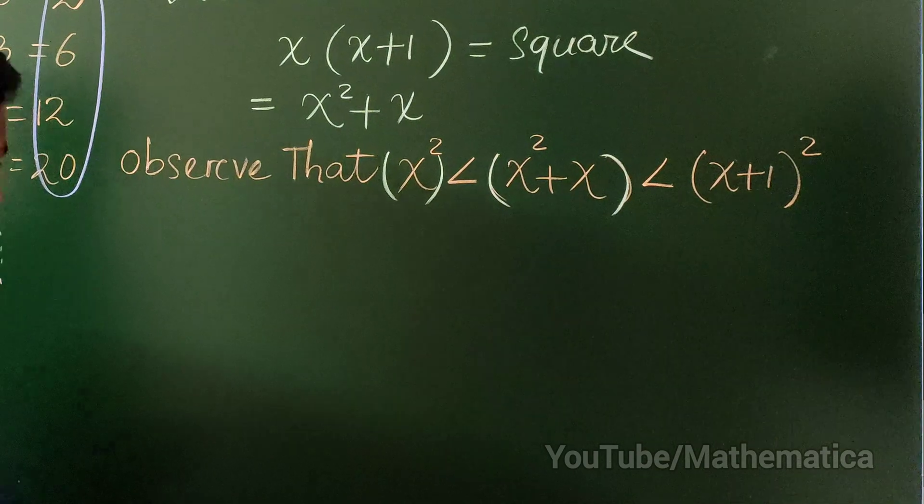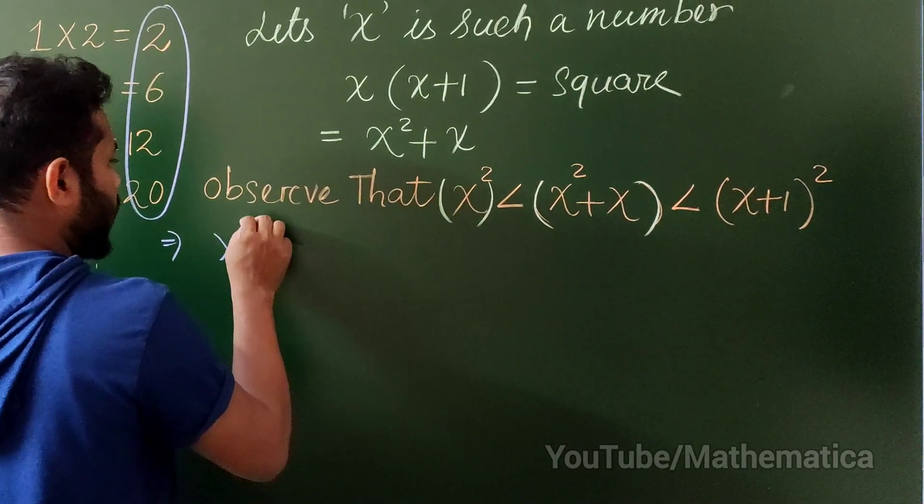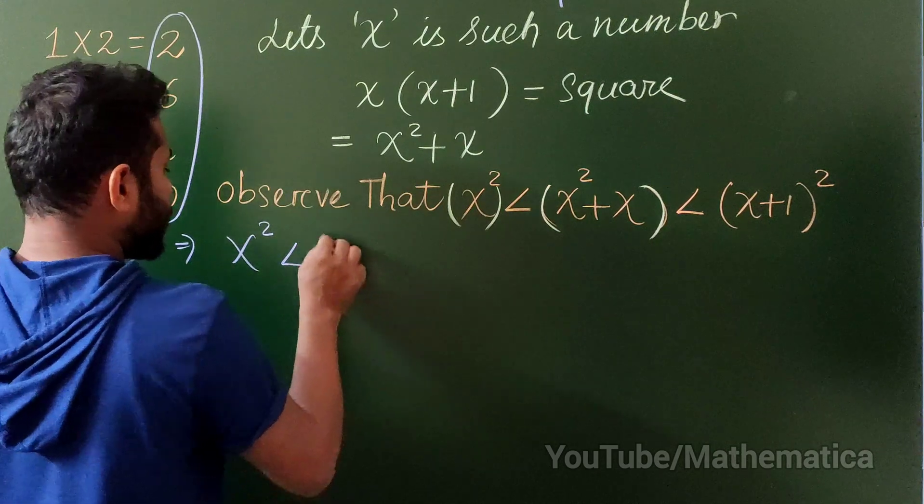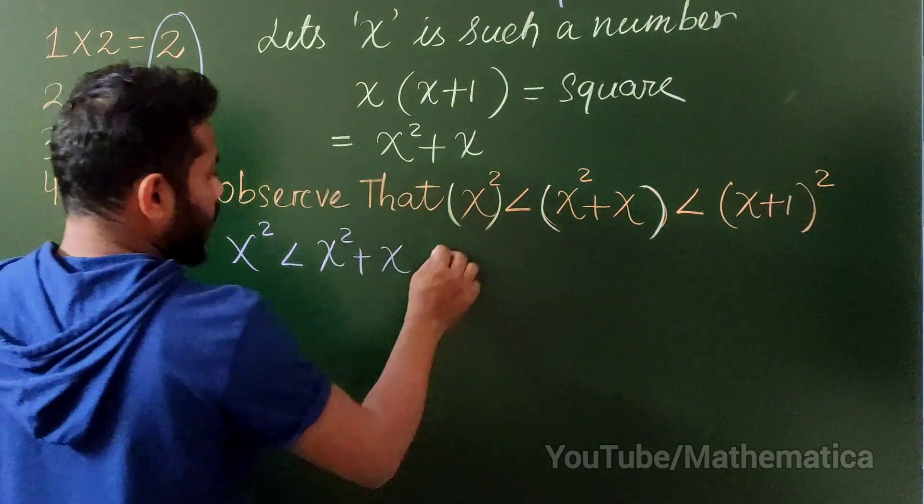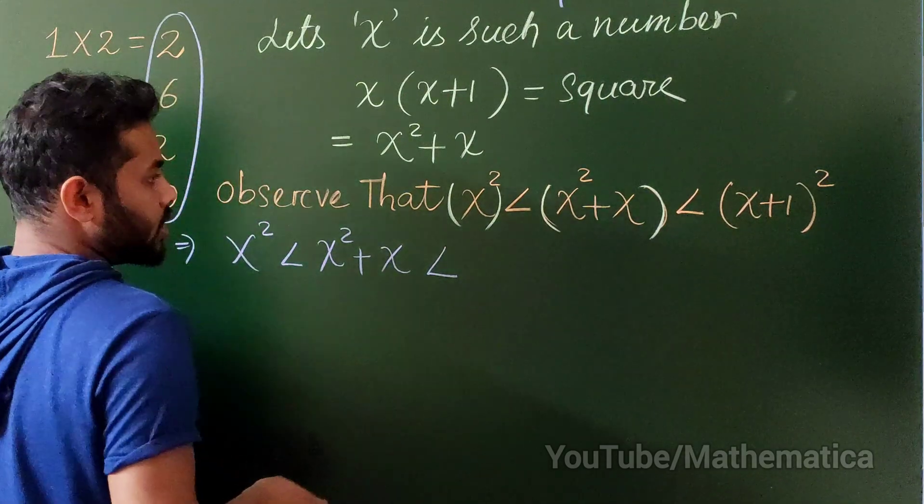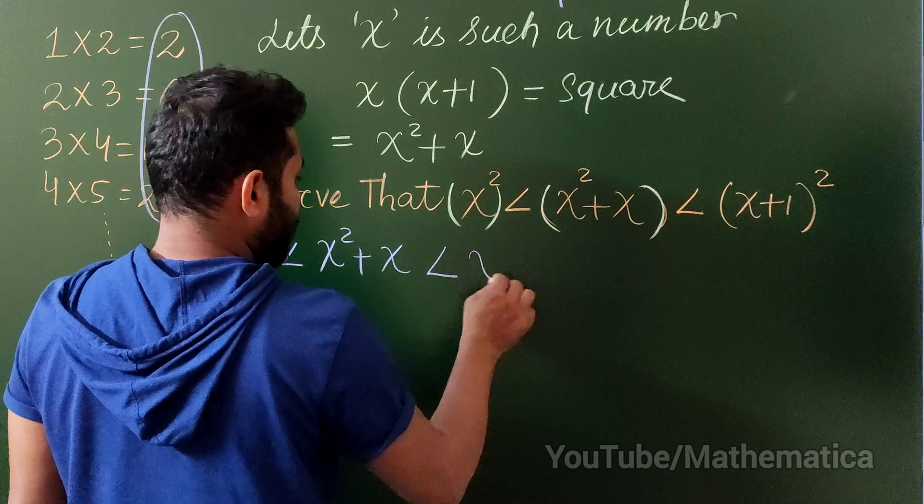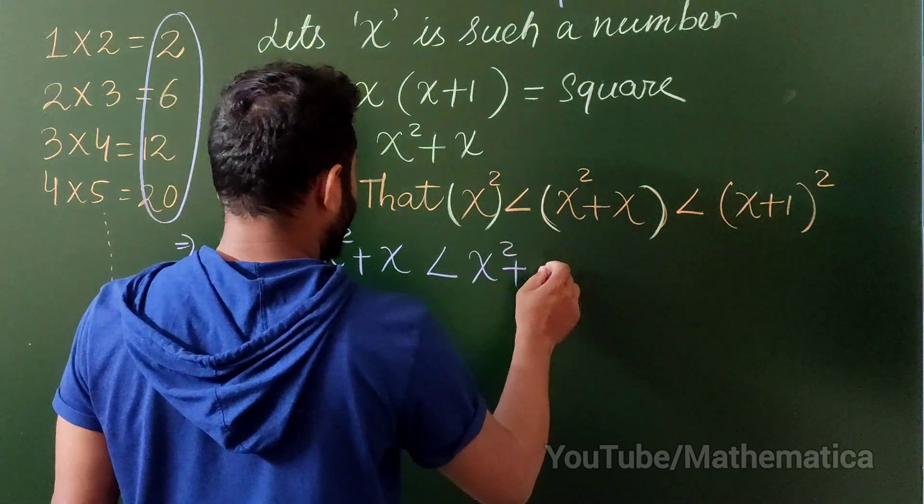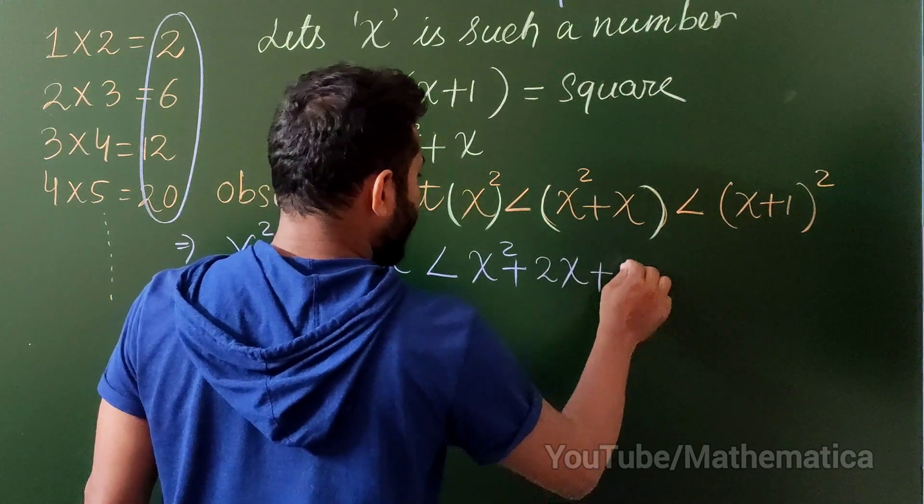Why? Let me show you. x square is less than x square plus x obviously and this one is less than x plus 1 whole square. That is x square plus 2x plus 1.